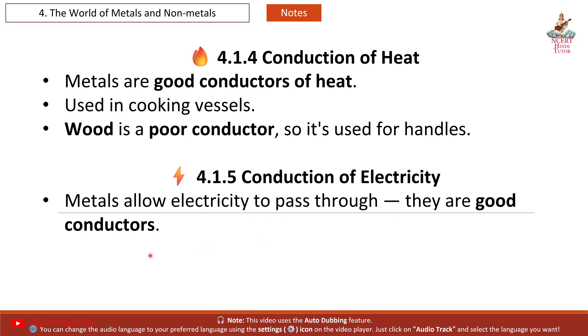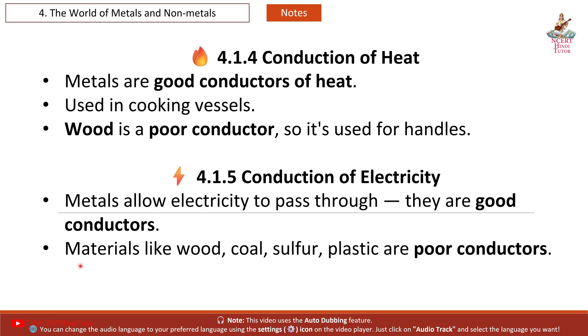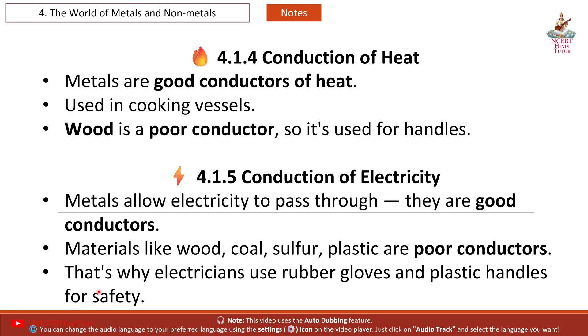4.1.5 Conduction of Electricity: Metals allow electricity to pass through — they are good conductors. Materials like wood, coal, sulphur and plastic are poor conductors. That is why electricians use rubber gloves and plastic handles for safety.